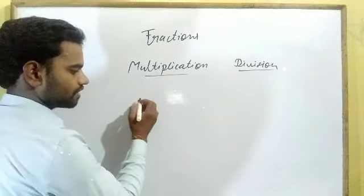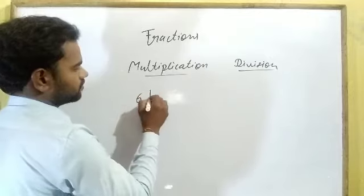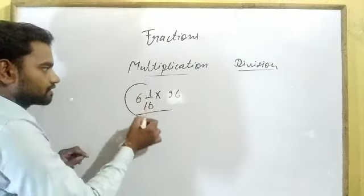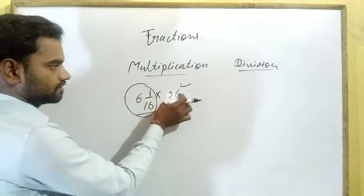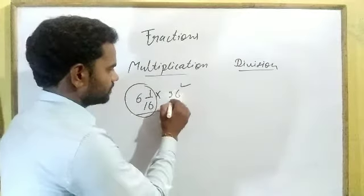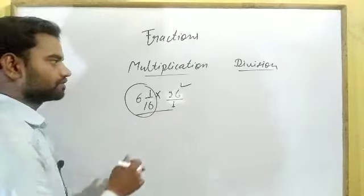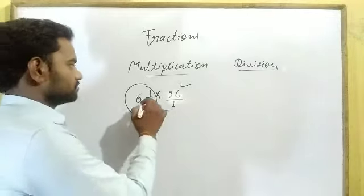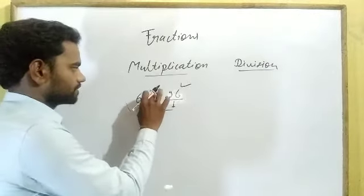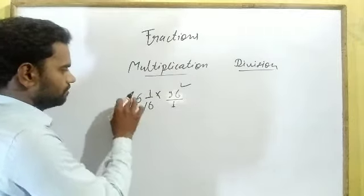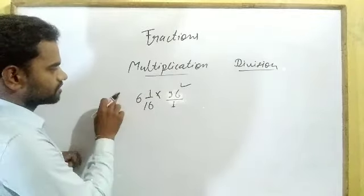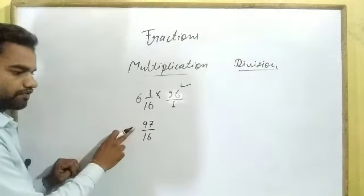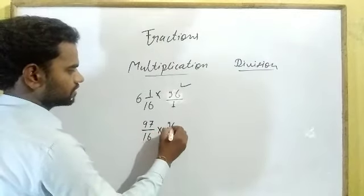Suppose that we have a fraction: 6 whole 1 upon 16, multiplied by 36. This is a fraction. In this fraction, we have to multiply. 36 is not a fraction now, but if we place 1 in the denominator, then it becomes a fraction. So in order to multiply these two fractions, our first step is to check which fraction is in mixed form. First of all, convert the mixed form into improper form — then 16 × 6 is 96 plus 1 gives 97 upon 16. This is in improper form. Now multiply by 36 upon 1.